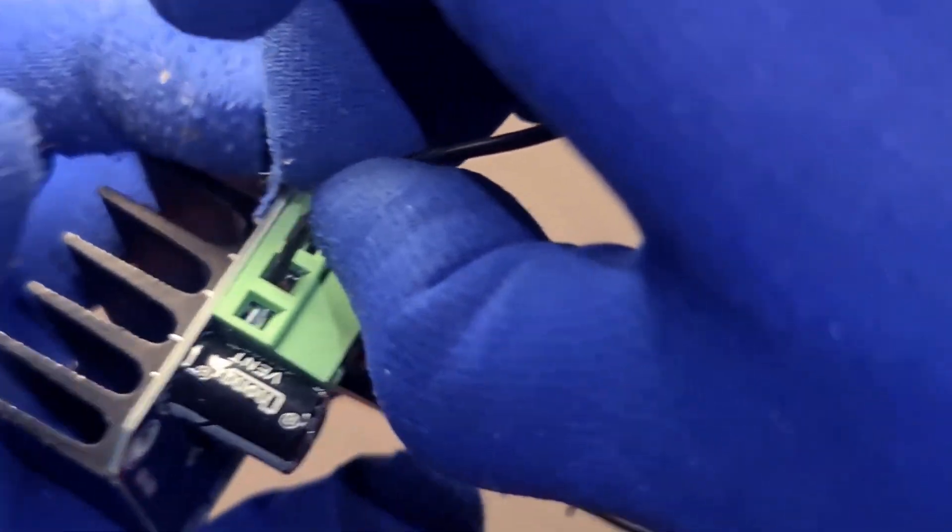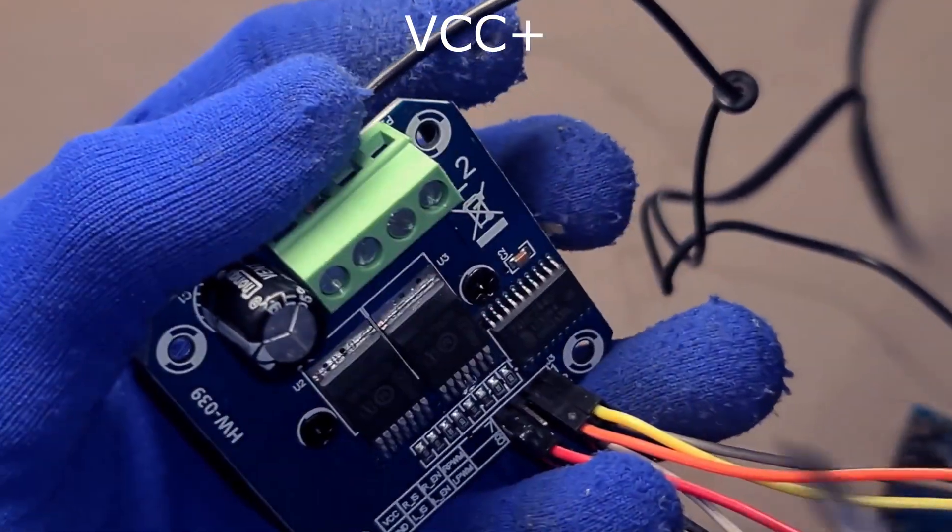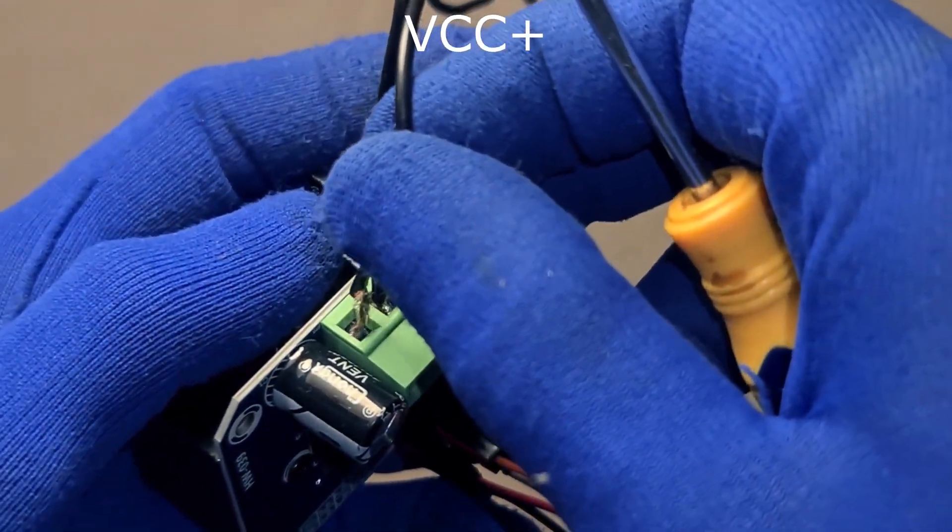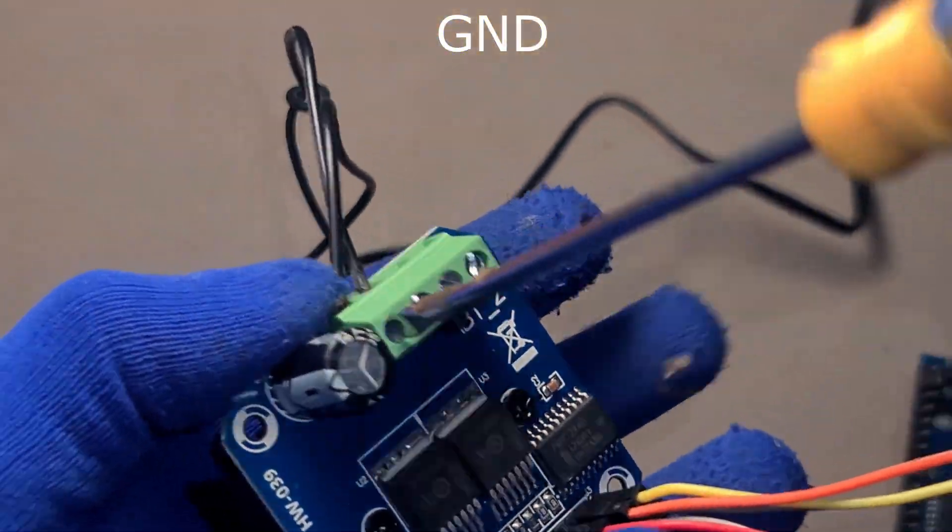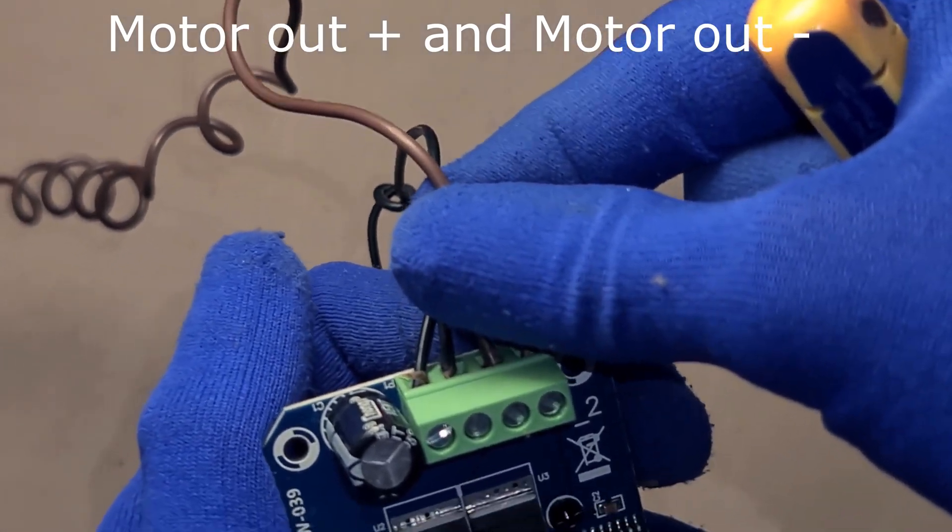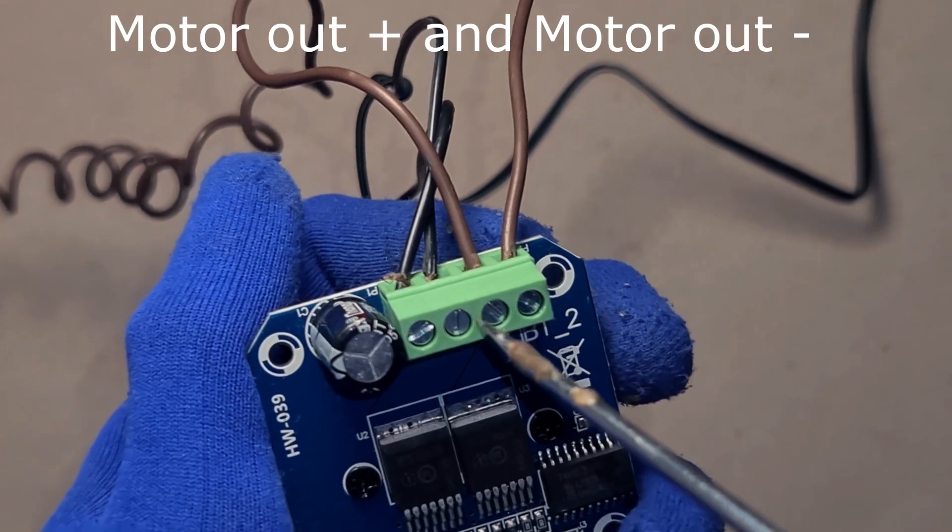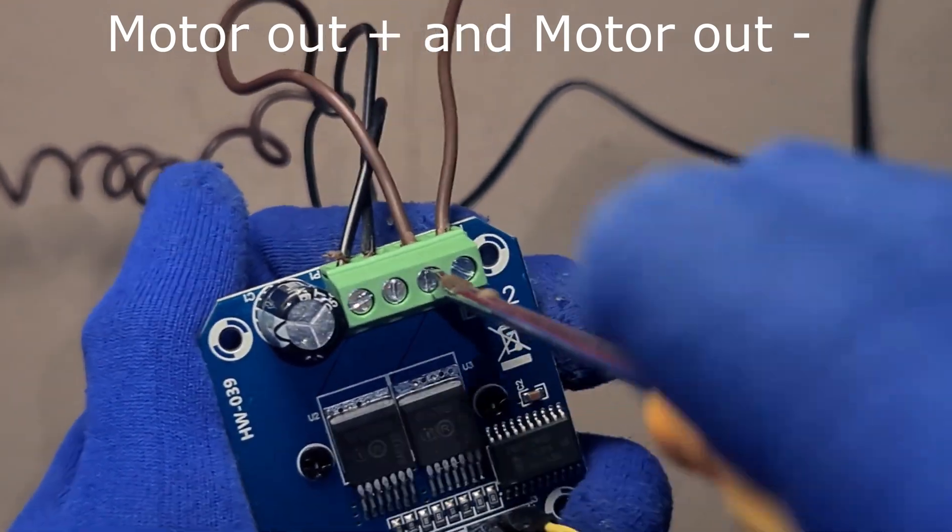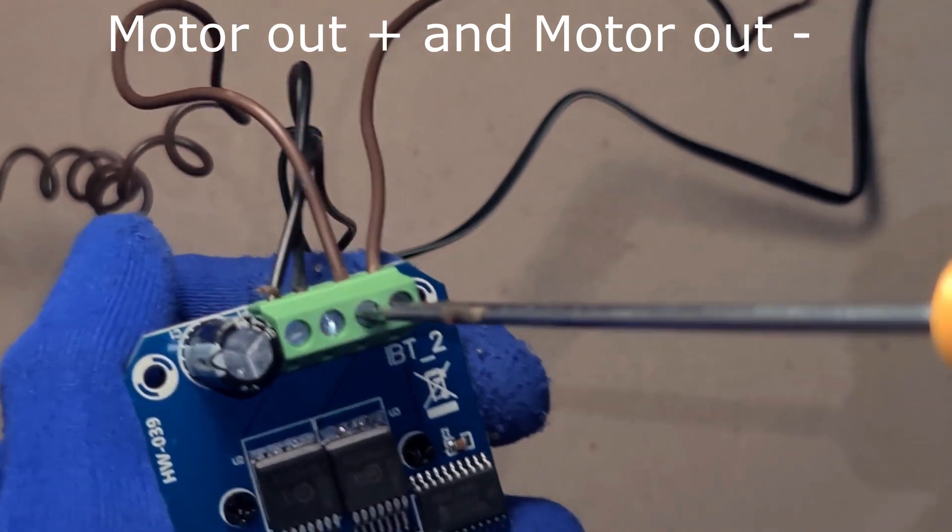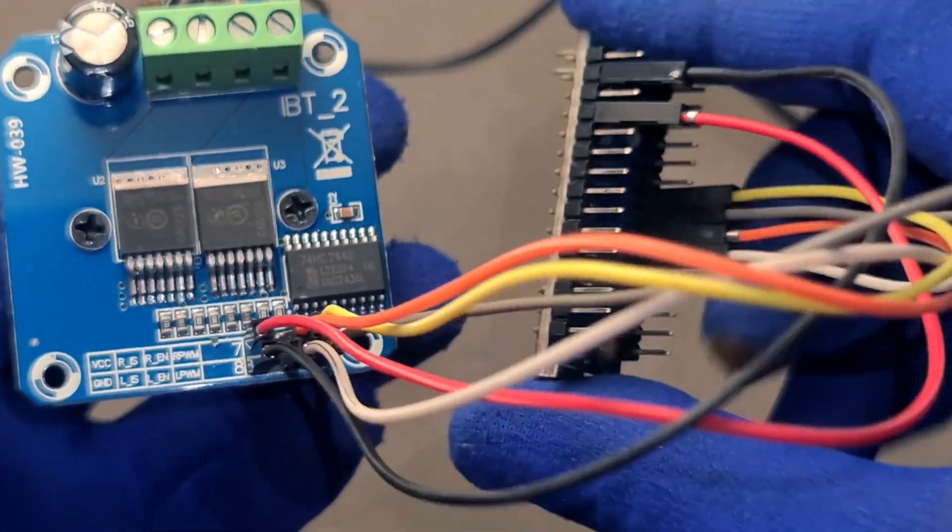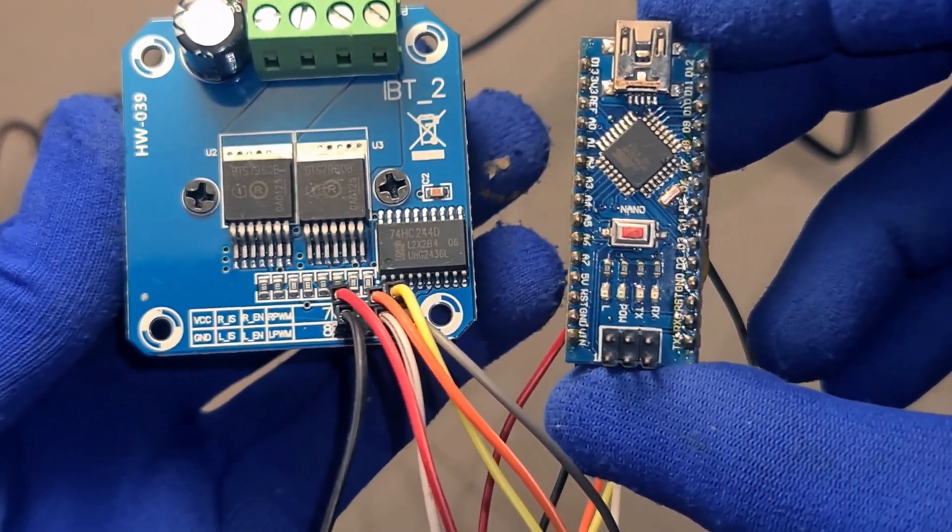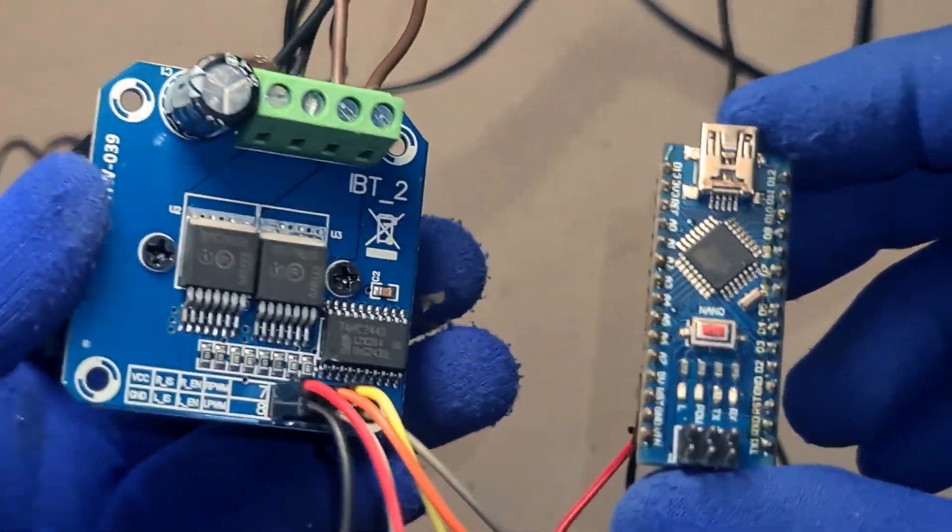Motor power pins. Motor VCC plus. This is where you connect your battery or power supply positive terminal. This supplies actual power to the motor. For 775 motors, that's usually 6 to 24 volts. Motor ground minus. Connect this to your battery negative. Motor output pins. Motor out plus and motor out minus. These go directly to your DC motor. Depending on the PWM signals you send, the polarity across these pins will change. And that's what controls the direction of rotation. So to summarize, VCC and GND power the logic. R-PWM and L-PWM tell it what to do. R-EN and L-EN turn it on. And the motor output does the spinning. Simple as that.